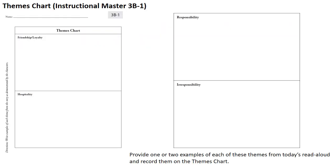Here is the themes chart if you don't have it already, which you should be filling out as we go. Again: friendship, loyalty, hospitality, responsibility, and irresponsibility. For this chapter, I wouldn't say there's too much that we learned about irresponsibility. But don't worry — the next several chapters we're going to be dealing with Mr. Toad, and there is plenty of irresponsibility ahead for us.